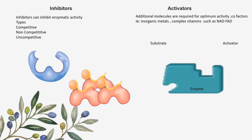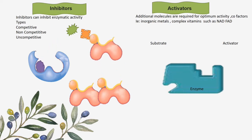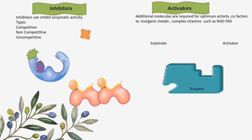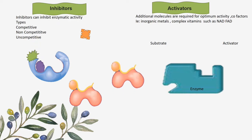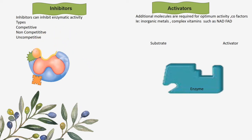The effects of inhibitors and activators on enzymes. Inhibitors can inhibit enzymatic activity — such as the competitive inhibitor, which can stop the substrate from entering into the active site. Likewise, the non-competitive inhibitor can also alter enzymatic activity, and even uncompetitive inhibitors can in any way affect enzymatic activity.